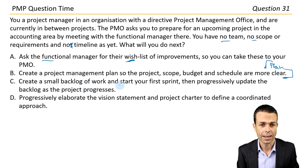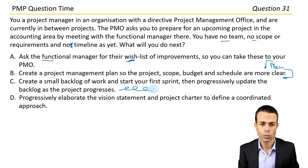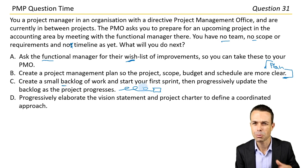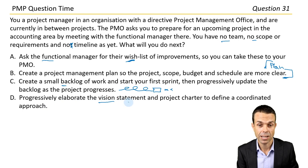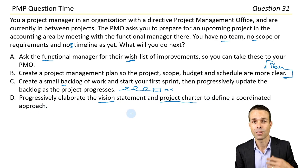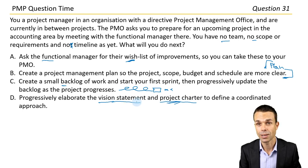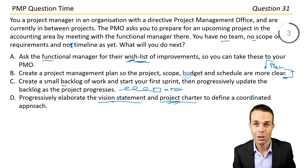Option C: Create a small backlog of work and start your first sprint, then progressively update the backlog as the project progresses. That's an agile or iterative approach, but we still may need to do the planning — why are we doing this project in the first place? I think we need something bigger: a vision, a direction. Option D: Progressively elaborate the vision statement and project charter to kick off the project and define a coordinated approach. Remember, we're in the very early days — the project hasn't even been kicked off. To kick off a project we do need a project charter, or in an agile environment a vision statement, to find out where we're going. Then we can do all the other things. Let's go with answer D.